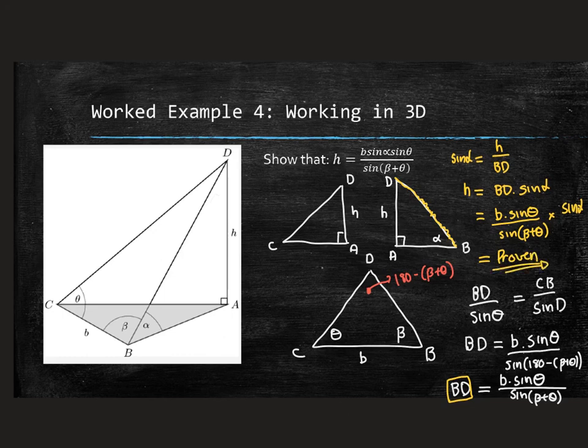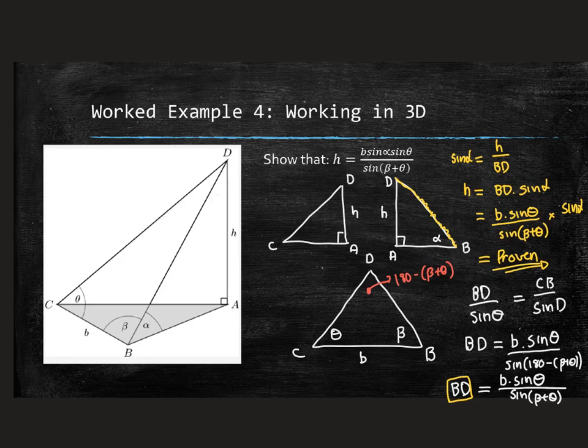These 3D problems require taking a 3D drawing, flattening it into 2D triangles, and finding where information can be transferred. In almost all cases you'll first use the sine, cosine, or area rule, and then normal SOHCAHTOA to finalize. I hope you've enjoyed the trigonometry. These videos are on my YouTube channel. The test is on the 9th of July covering everything we've done — I'll share past papers and examples. Please get in touch with your teacher or me if you have any questions.